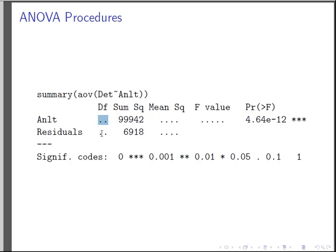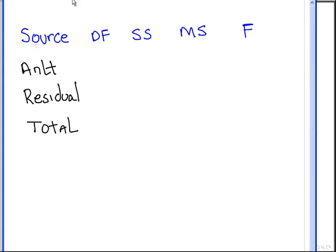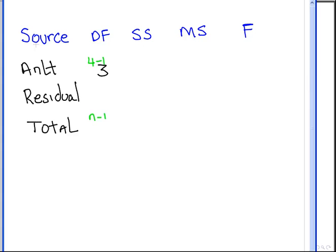So first off, the analysts, the number of degrees of freedom for the analysts. Well, if we look back here, we see that there is actually four analysts. So analyst is a factor with four levels. The degrees of freedom is going to be 4 minus 1, which is 3. The total degrees of freedom is n minus 1. And let's just see how many values we have all together. There is 24 observations all together, six each for each of the four analysts. So n here is going to be 24.